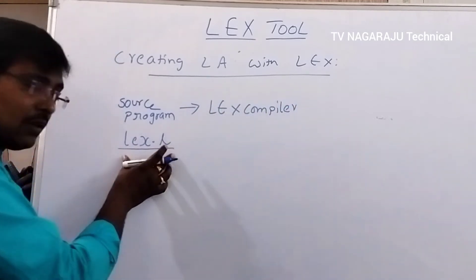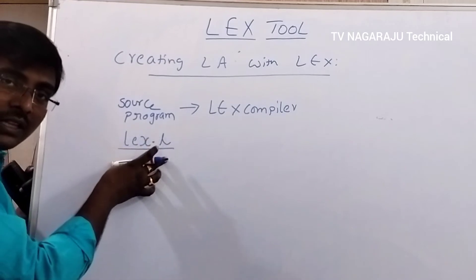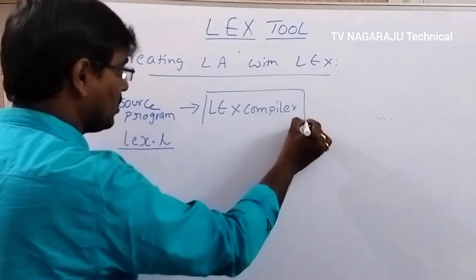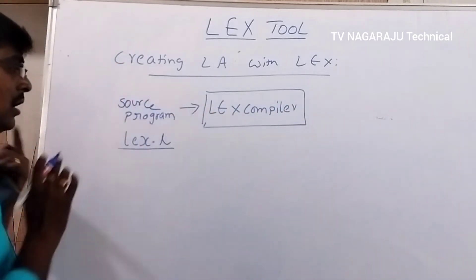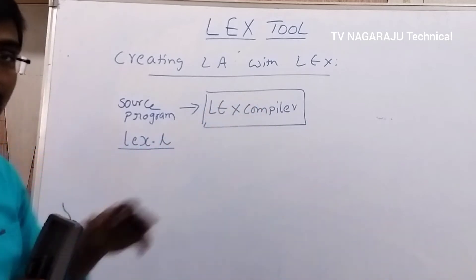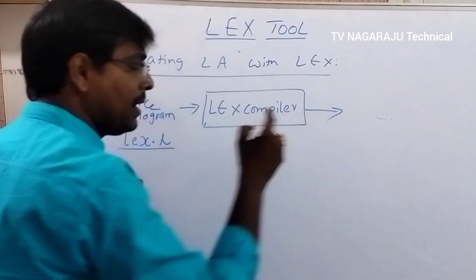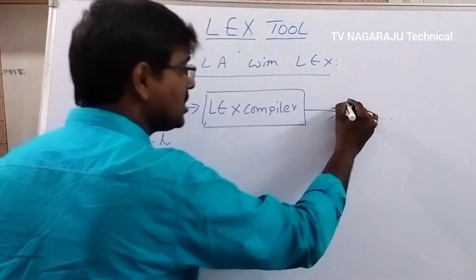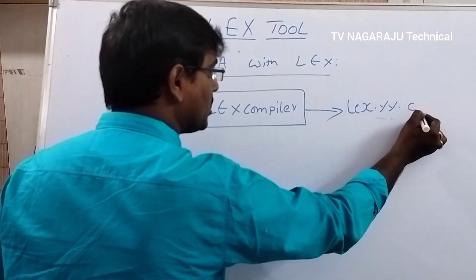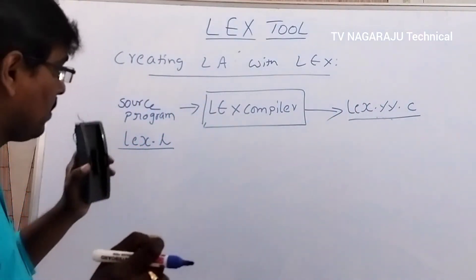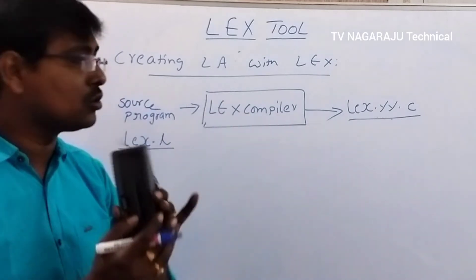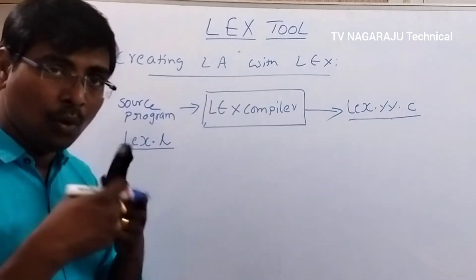If it is a Lex language, only the Lex compiler can process this language. Whenever we provide the Lex language to the Lex compiler, the Lex compiler produces a C program called lex.yy.c. This is the predefined format — the Lex compiler produces a C program. This completes the first step of creation.